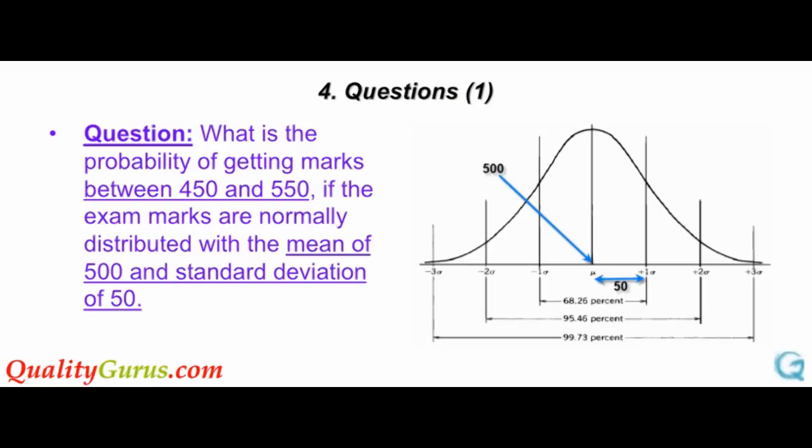Let's understand the concept of standard Normal Distribution with the help of a few examples. If the exam marks are normally distributed and have the mean of 500 marks and the standard deviation of 50, find the probability of getting marks between 450 and 550.